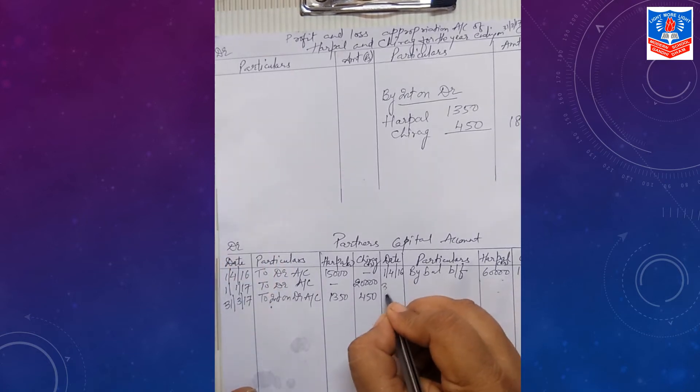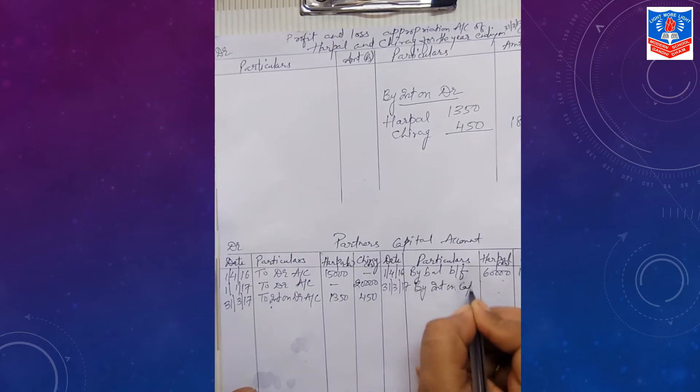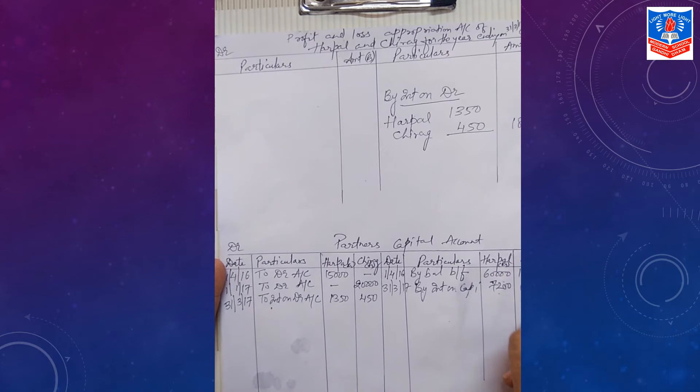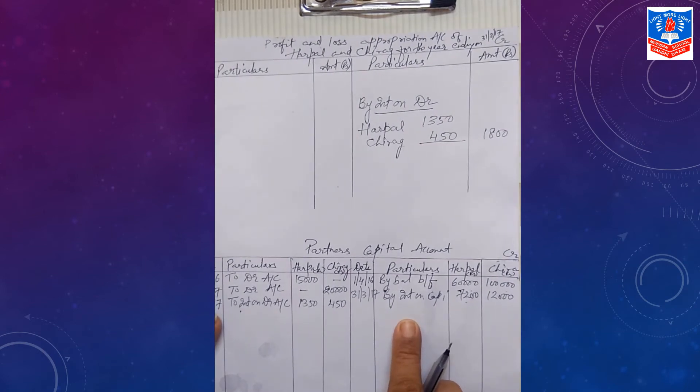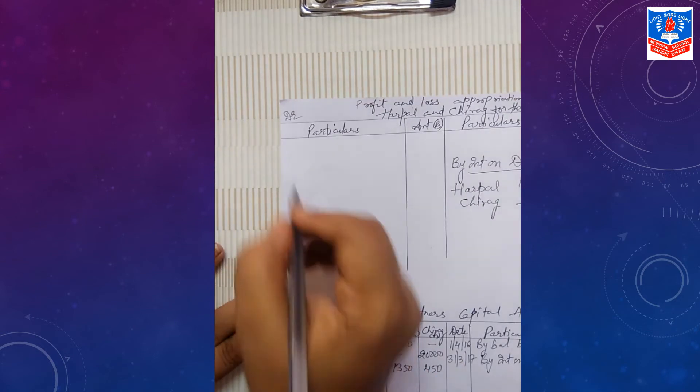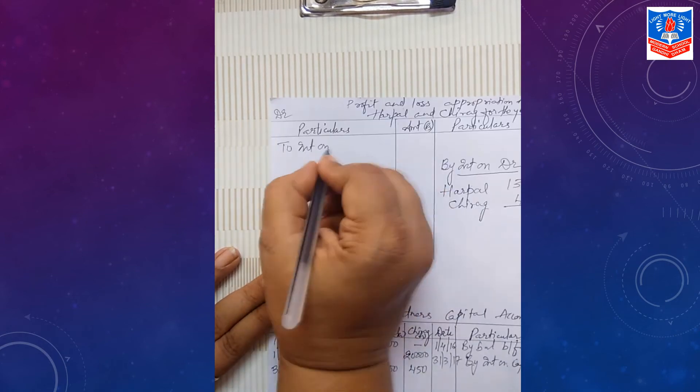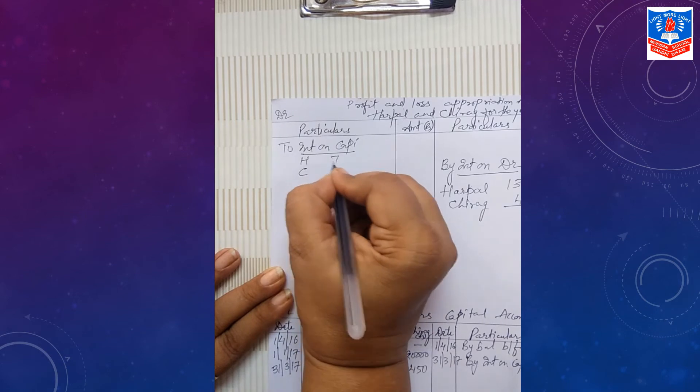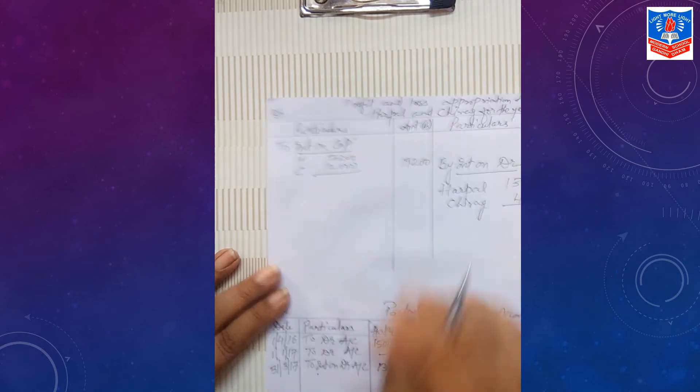Please see to it. Interest on capital is income for partner credited to partner's capital, expense for firm debited to P&L appropriation account. Last date it will be calculated. Interest on capital, Rs. 60,000, 12% is Rs. 7,200. Rs. 1 lakh, 12% for full year, comes to Rs. 12,000. It is income for partner but expense for firm. To interest on capital, Rs. 7,200, Rs. 12,000. Total comes to Rs. 19,200 outside.